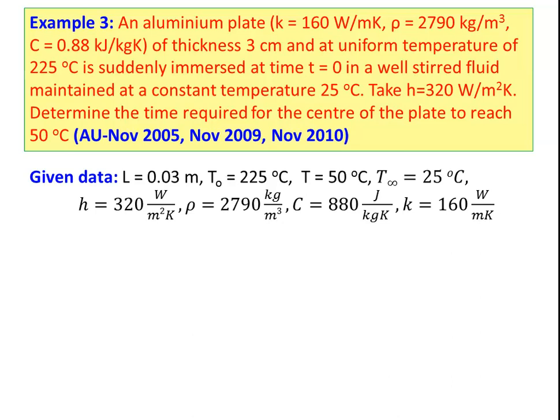Initial temperature is 225 degree Celsius. The temperature at the center t equals 50 degree Celsius. The fluid temperature is 25 degree Celsius with heat transfer coefficient 320 watts per meter square kelvin. And the properties of the material: density is 2790 kilograms per meter cube, specific heat is 880 joules per kilogram kelvin, and thermal conductivity is 160 watts per meter kelvin.